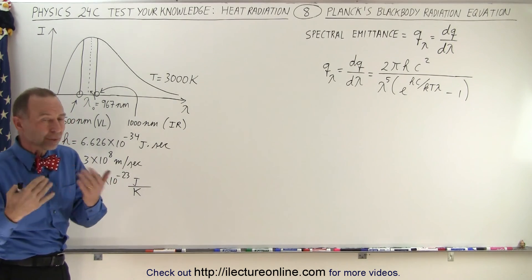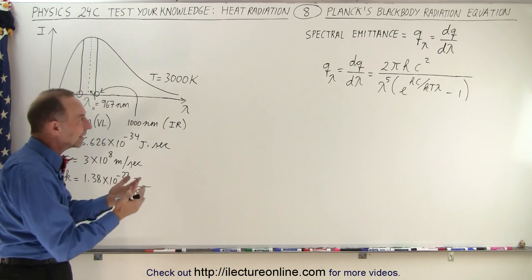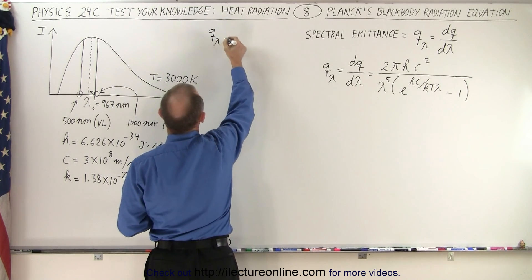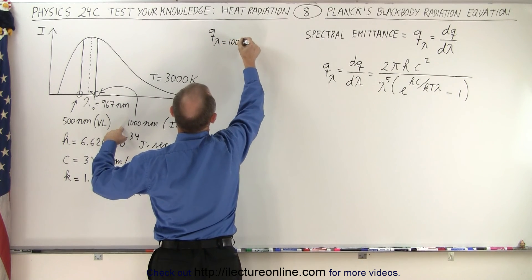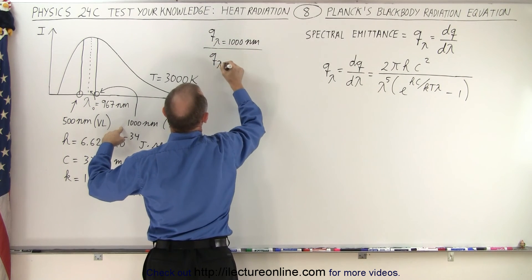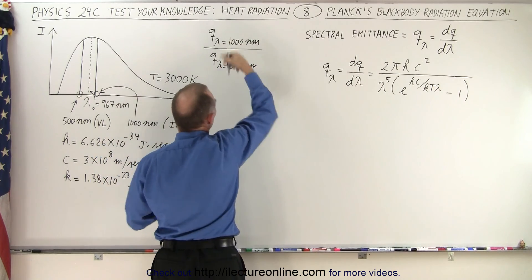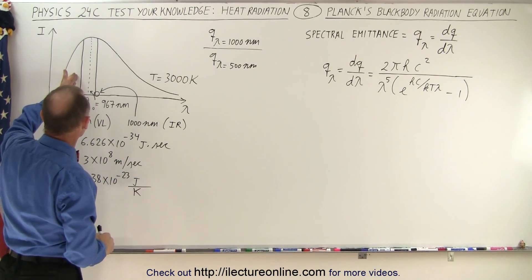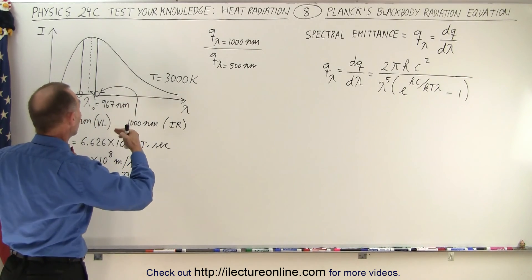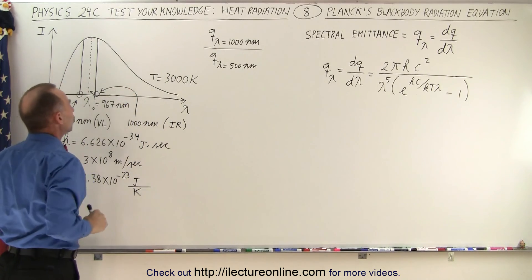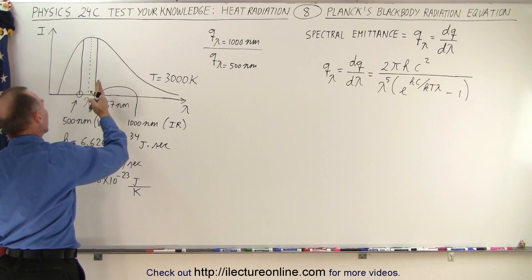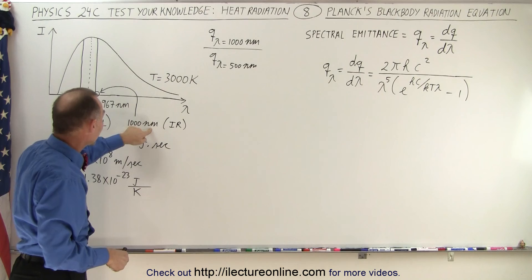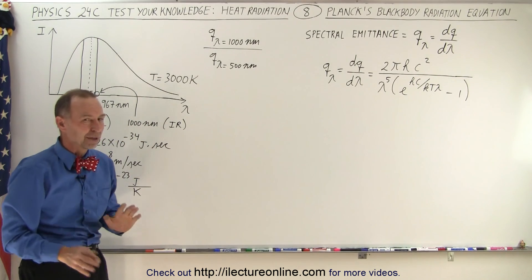Let's simply plug in the numbers to get familiarity with the equation. We want to calculate the spectral emittance ratio: Q at lambda equals 1,000 nanometers divided by Q at lambda equals 500 nanometers. We'd expect it to be smaller for 500 nanometers because we're definitely far to the left of the peak of the curve, while 1,000 nanometers is very close to the peak.